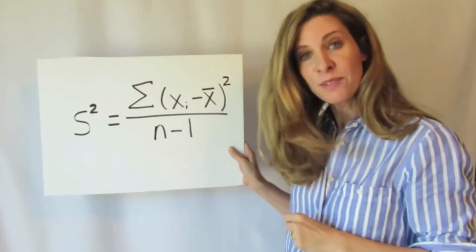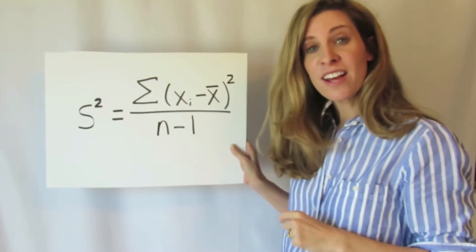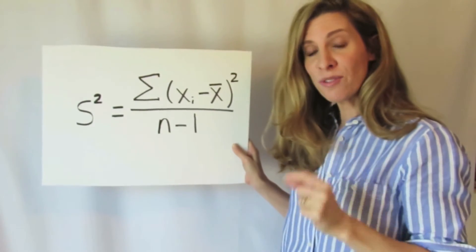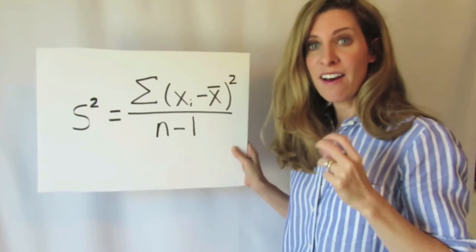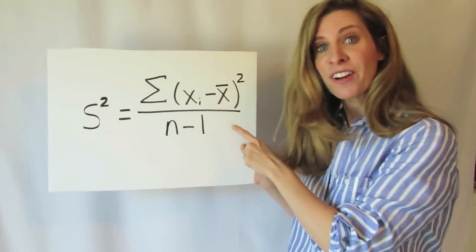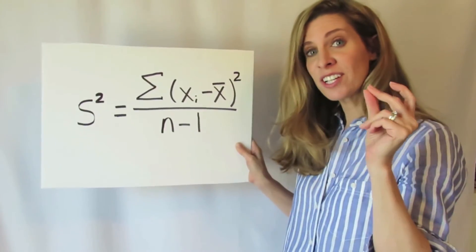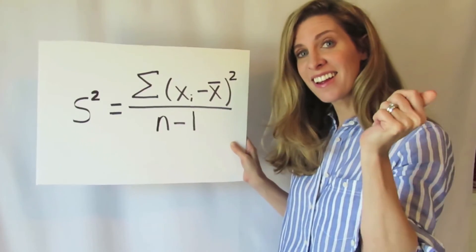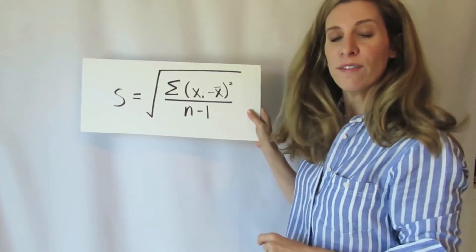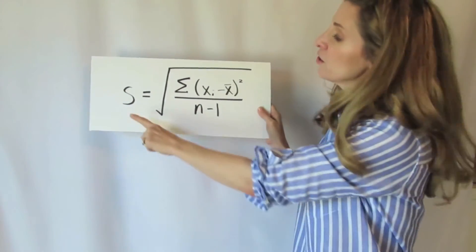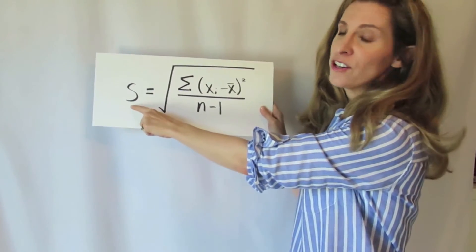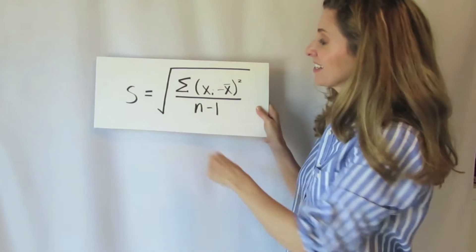And that can be a little bit confusing. So we generally make a very small correction to the variance, which is we simply take the square root of the variance to find our measure for the standard deviation, s.